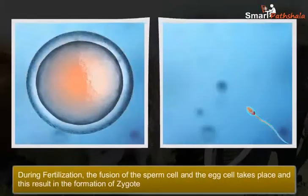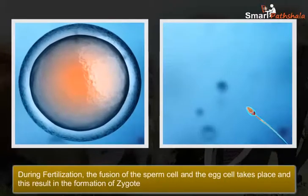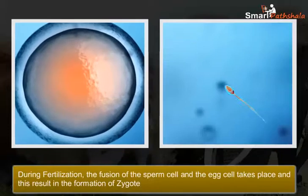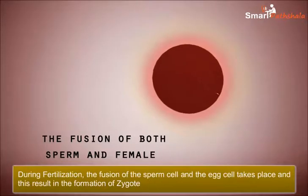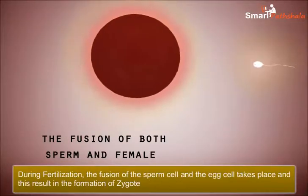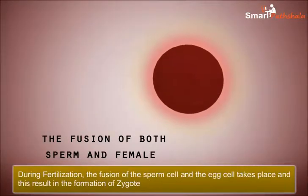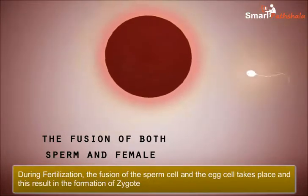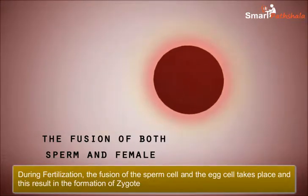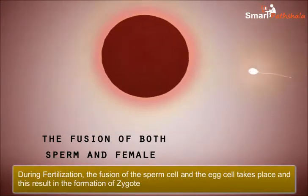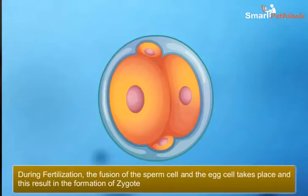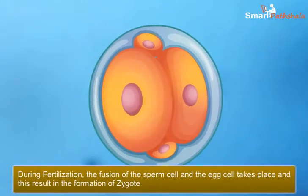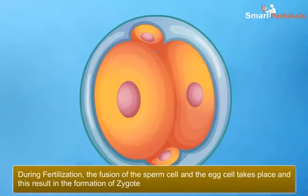Fertilization: When sperms come in contact with an egg, one of the sperms may fuse with the egg. Such fusion of the egg and the sperm is called fertilization, and fertilization is the first step of reproduction. During fertilization, the fusion of the nuclei of the sperm and that of the egg takes place and a single nucleus is formed. This results in the formation of a fertilized egg, which is also called a zygote.